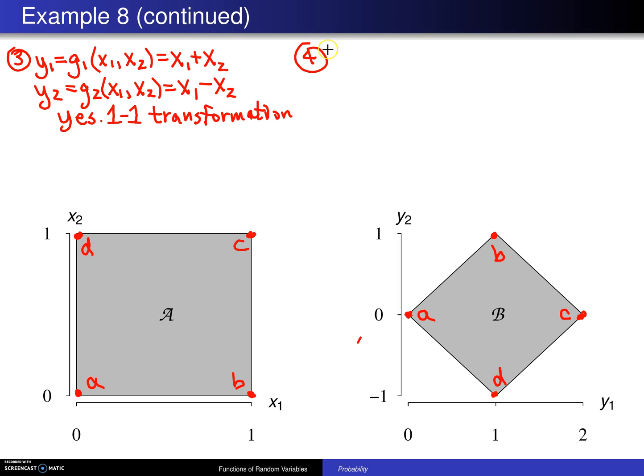And step 4 is finding those inverses. So x1 is g1 inverse of y1 and y2. If you add these two equations, the x2s drop out, and when you solve for x1, you get y1 plus y2 divided by 2. And then when you solve for x2, which will be g2 inverse of y1 and y2, you can find that by subtracting these two equations. In that case, x2 drops out. And when you solve, you will get y1 minus y2 divided by 2. And that is the inverse transformation.